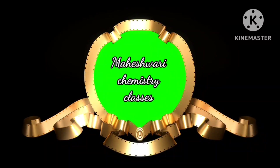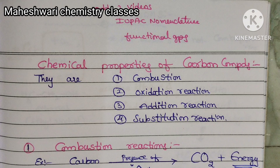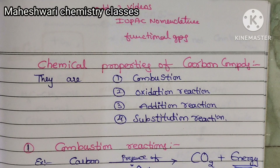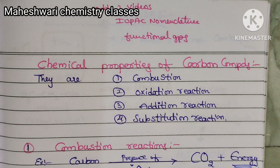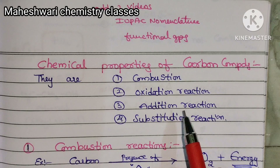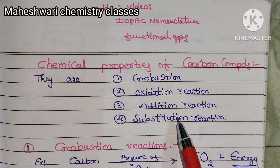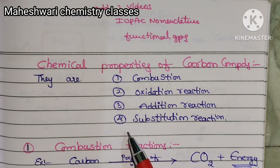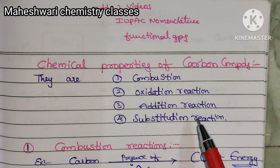Hi and welcome to Maheshwari Chemistry Classes. The topic is carbon and its compounds — specifically the chemical properties of carbon compounds. There are four types mainly: first, combustion reaction; second, oxidation reaction; third, addition reactions; and fourth, substitution reactions.